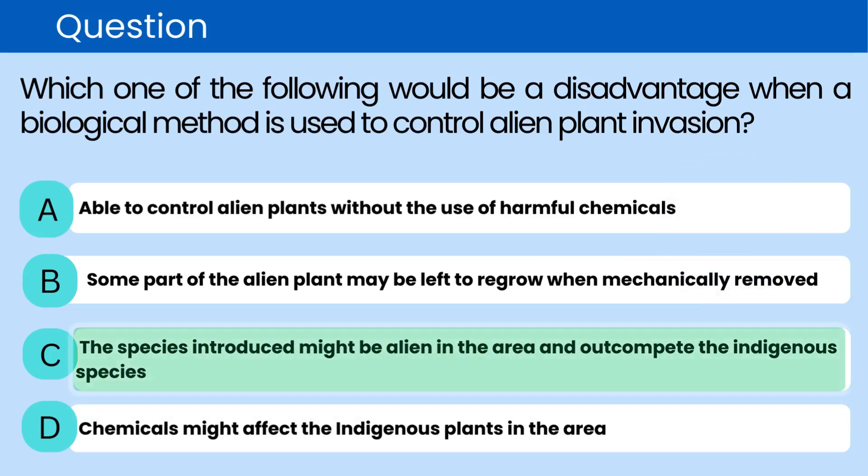The correct answer is C. The species introduced might be alien in the area and out-compete the indigenous species. A biological control method might introduce a species that becomes invasive itself, out-competing native species.